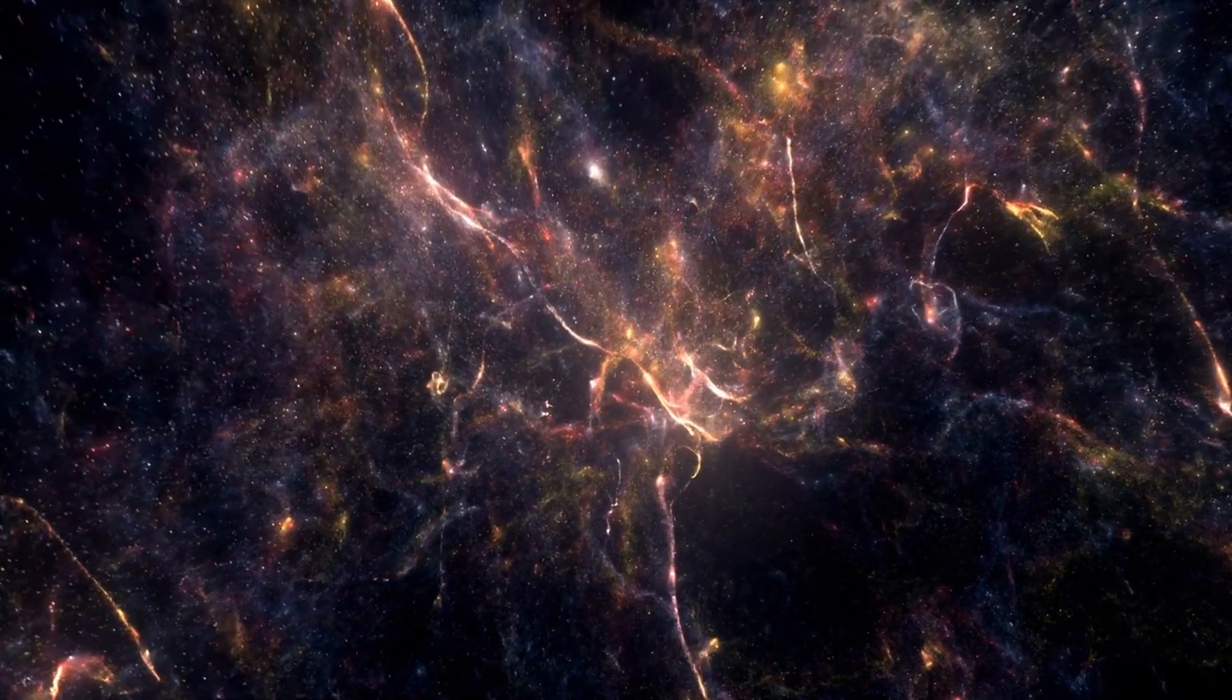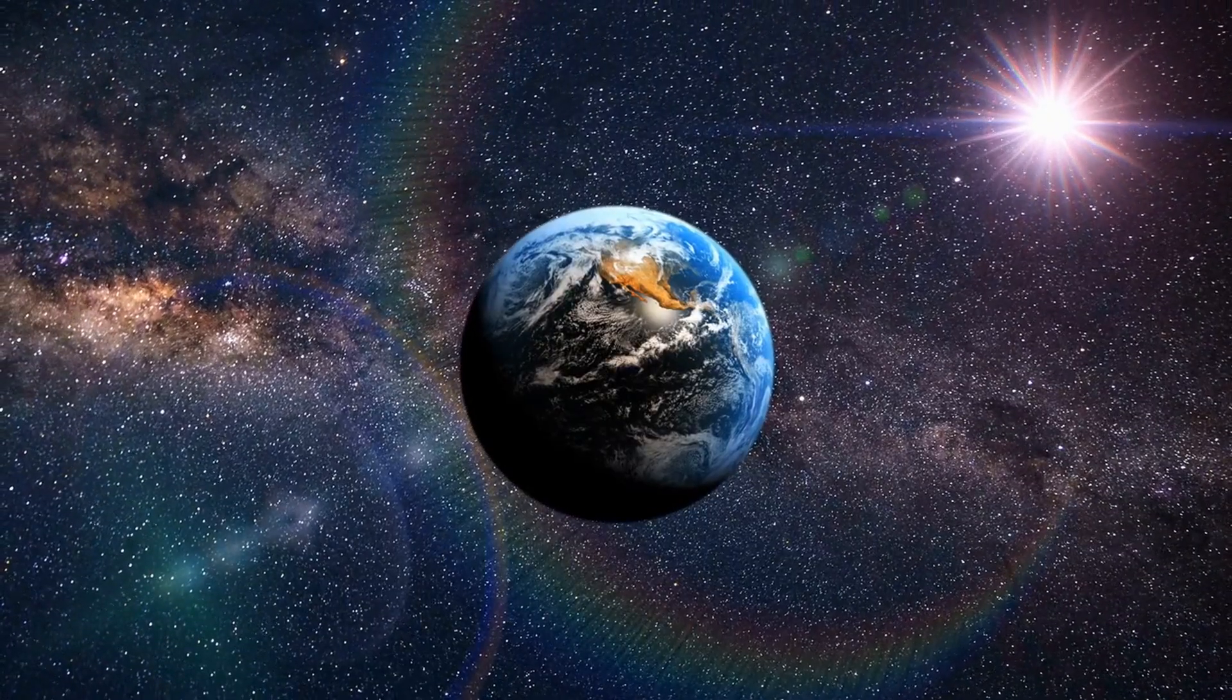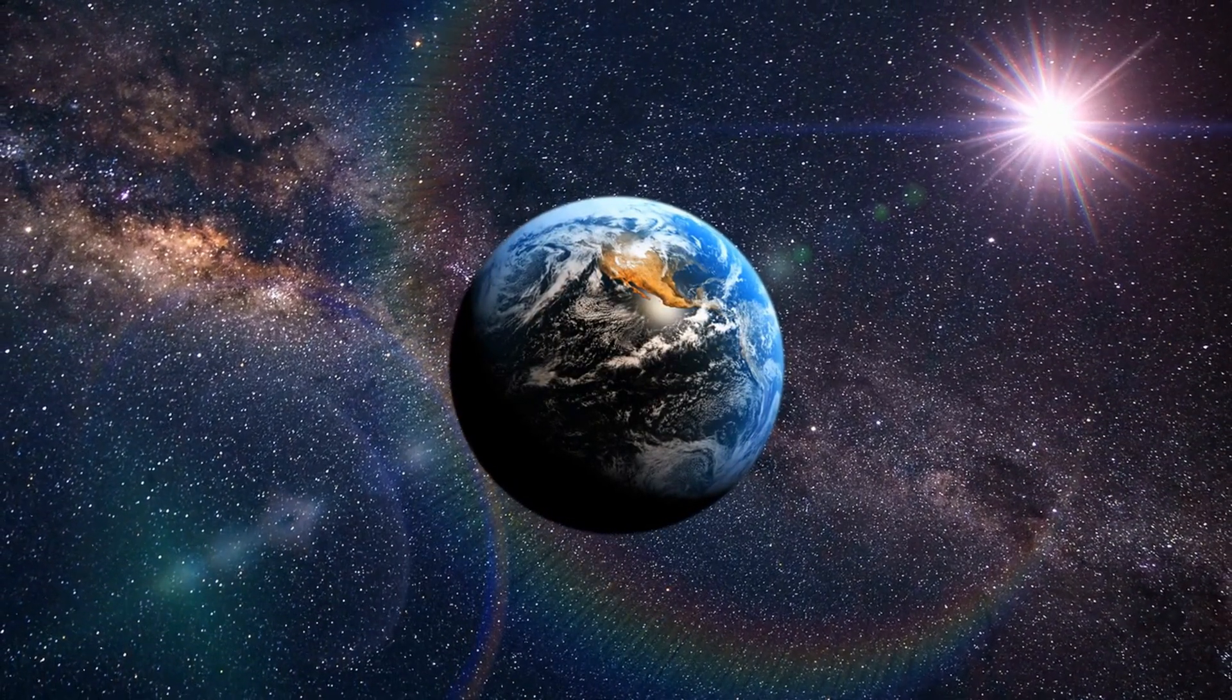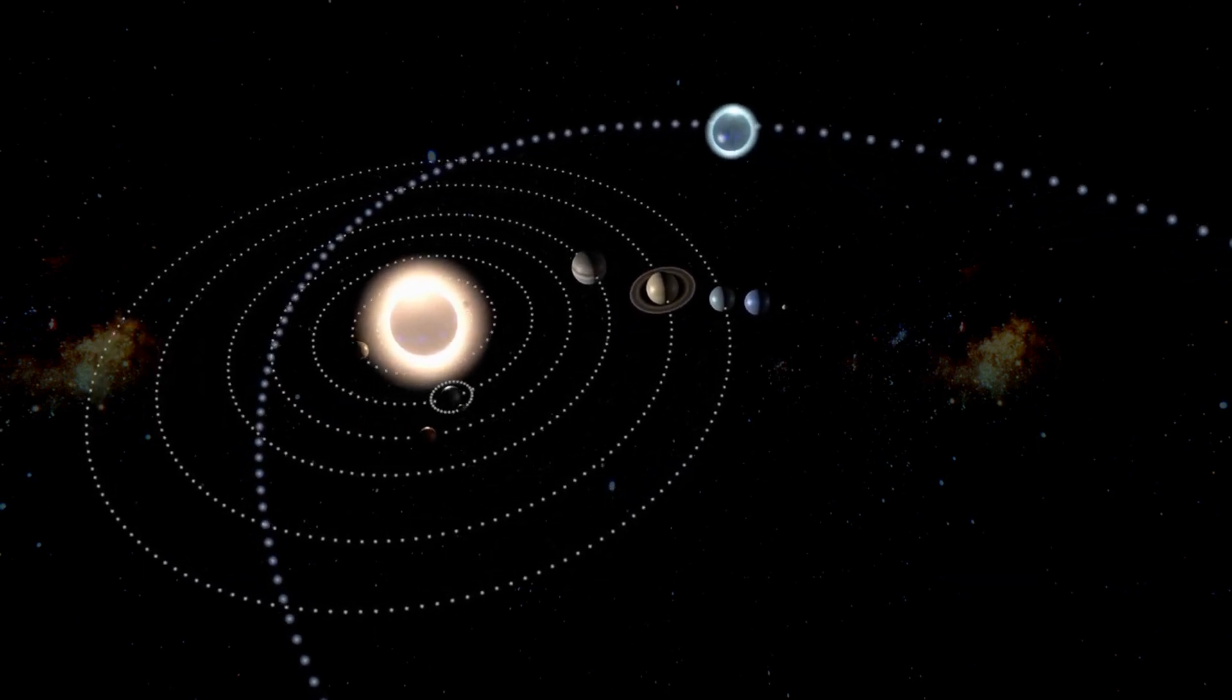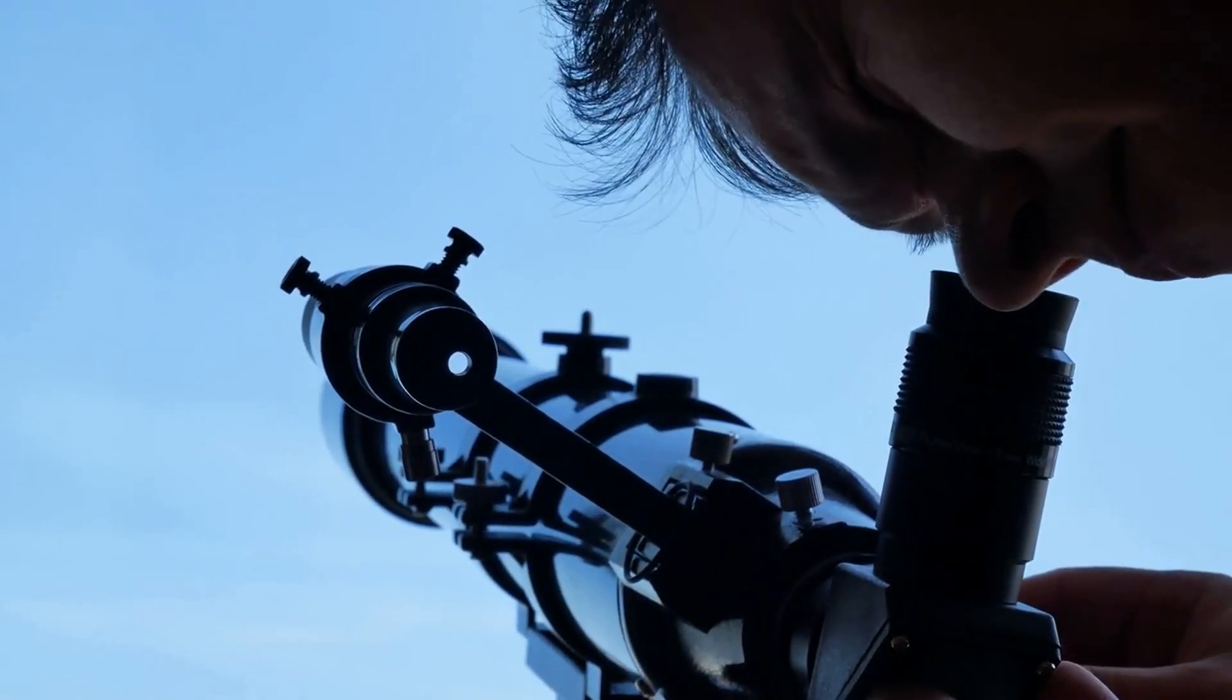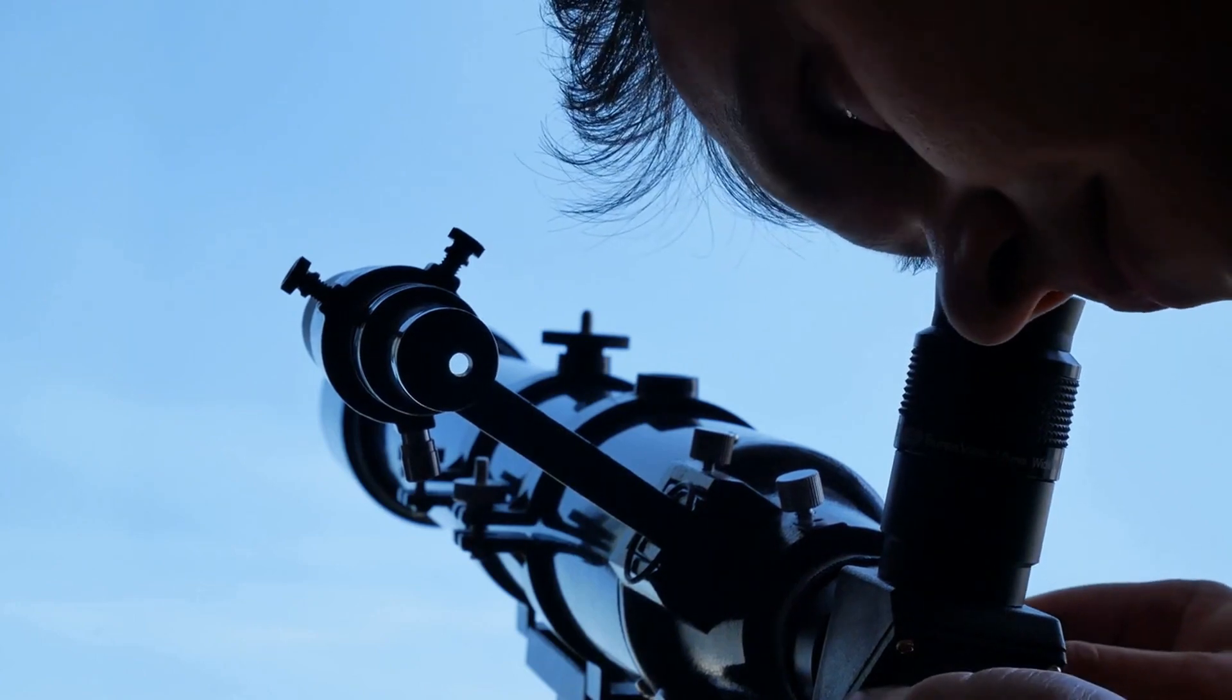The universe never fails to amaze us, and this time a new visitor is set to make an appearance. Comet 2022 E3 (ZTF) is expected to make its way near Earth, and the best part—it might be visible to the naked eye. According to space experts, the comet is set to make its closest approach to Earth by February 1st or February 2nd, 2023, and it could be bright enough to be seen without a telescope.